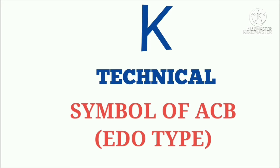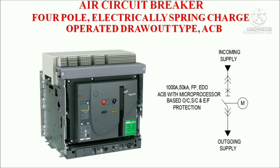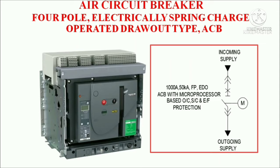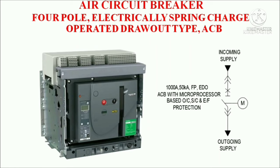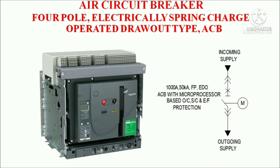Symbol of ACB EDO type. EDO type means spring charging will be done by motor, and the breaker is drawout type, meaning you can take the breaker out of the cradle. The symbol of EDO type ACB is shown here. For drawout, we use an arrow so that it is very clear whether it is EDO type or EF type.